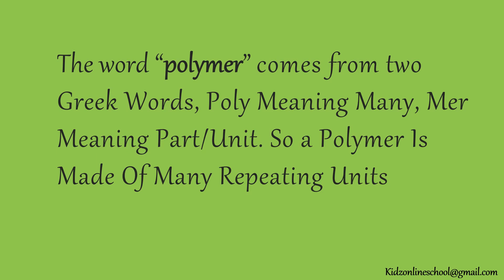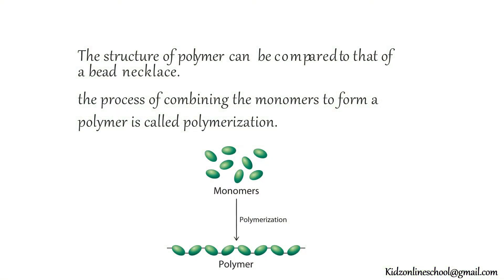The word polymer comes from two Greek words: poly meaning many, and mer meaning part or unit. So, a polymer is made of many repeating units. The structure of a polymer can be compared to that of a bead necklace. The process of combining monomers to form a polymer is called polymerization.